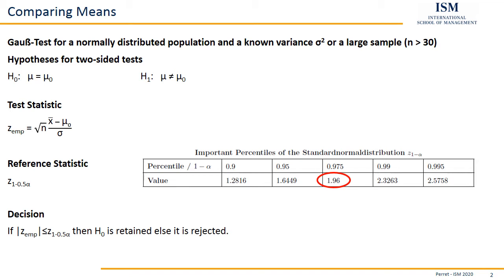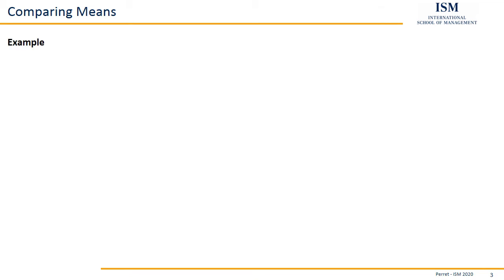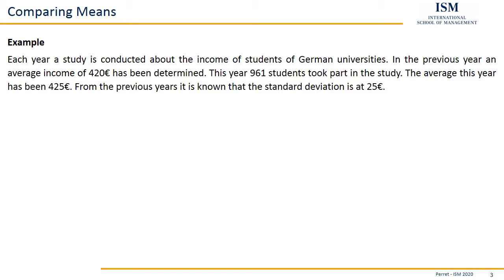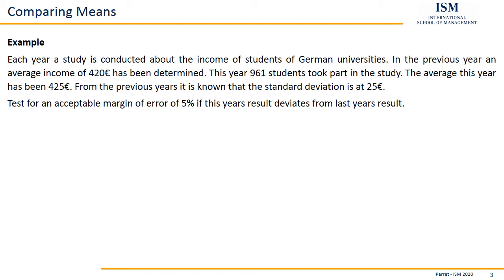Let's illustrate this with an example. Each year a study is conducted about the income of students in German universities. In the previous year, an average income of 420 euros was determined. This year, 961 students took part in the study and the average was 425 euros. From previous years, it is known that the standard deviation is 25 euros. Our task: test at an acceptable margin of error of 5% if this year's result deviates from last year's.